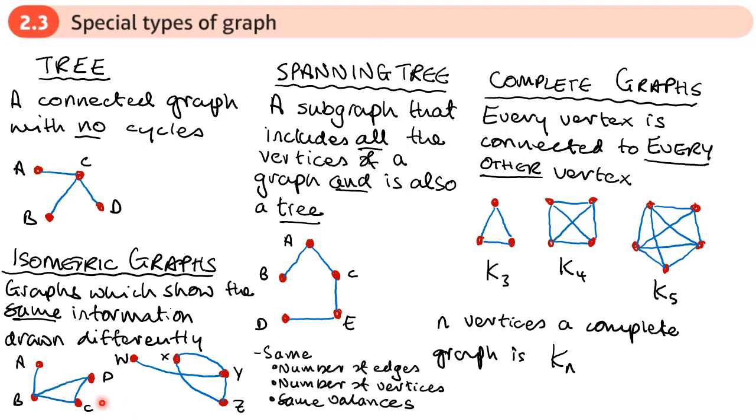So for two graphs to be isometric, they need to have the same number of edges, which these do, the same number of vertices, which they do. And each vertex must have the same valiancy or degrees, which they do. So these graphs here are isometric.